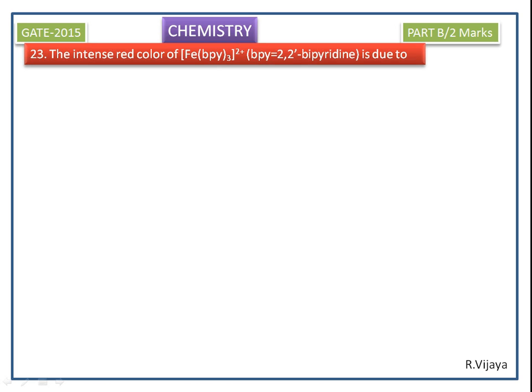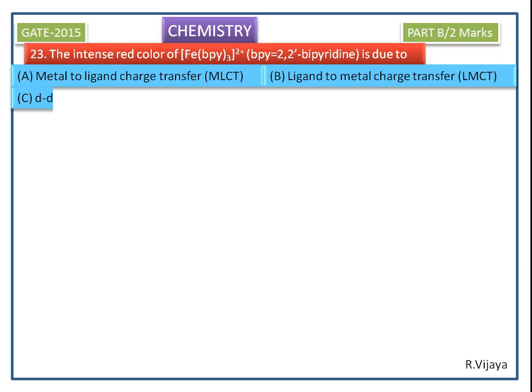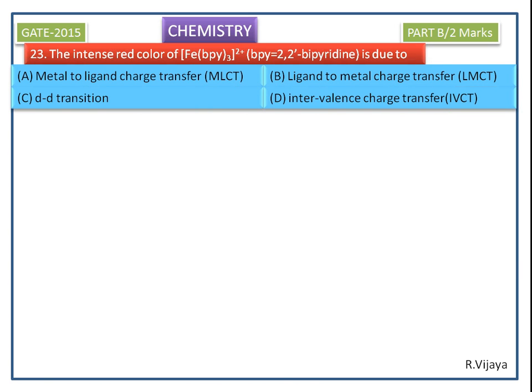The intense red color of the tris-bipyridine iron(II) complex is due to what? The options are shown here. The central metal ion is iron, and its valence electrons are 4s² 3d⁶.